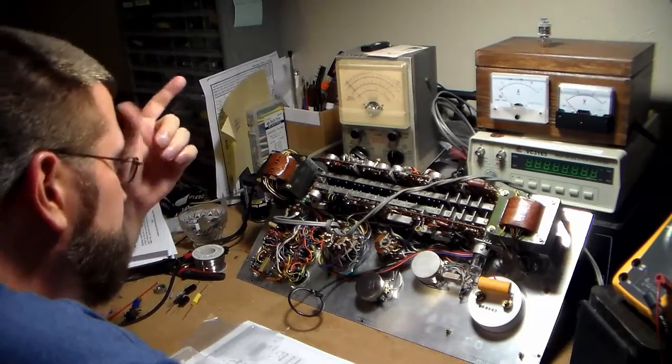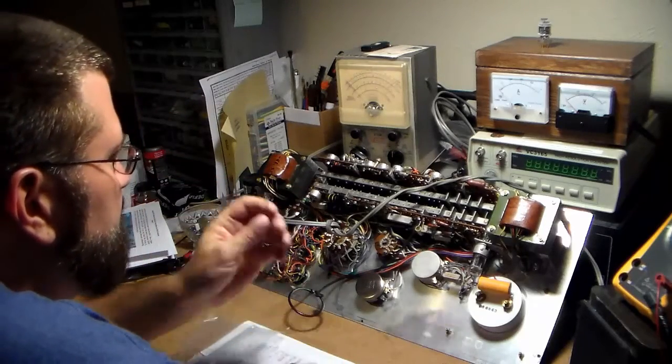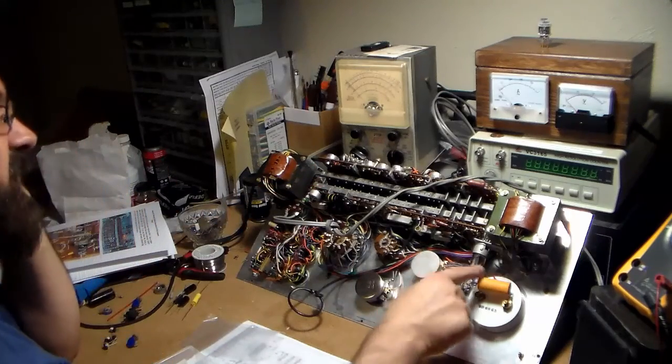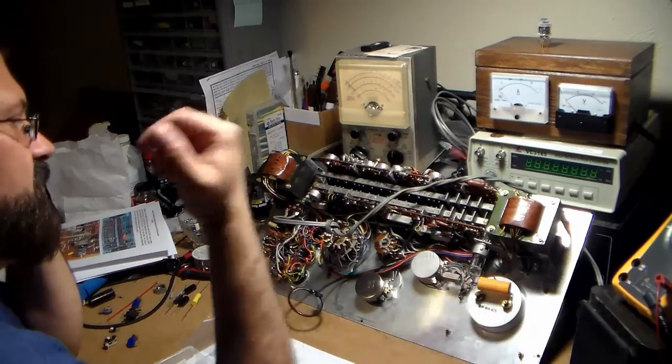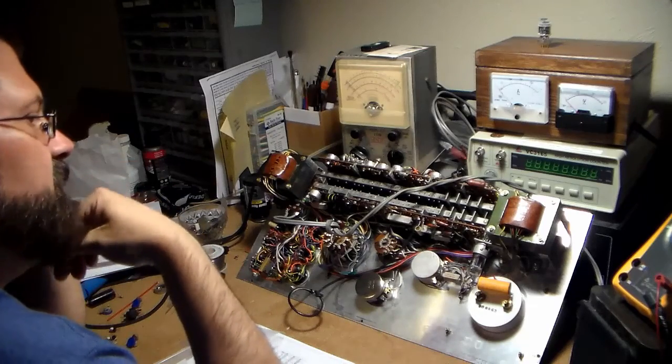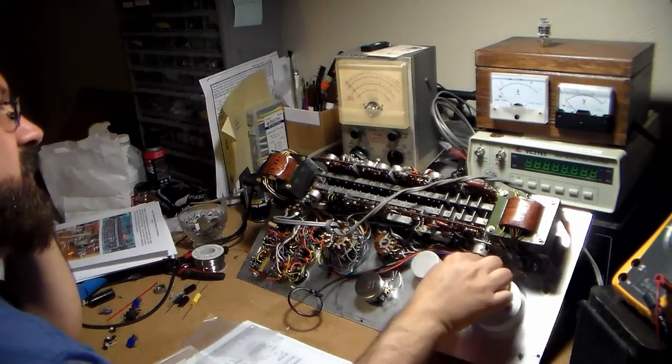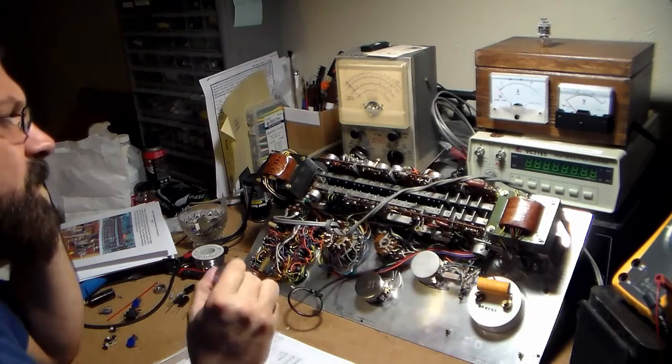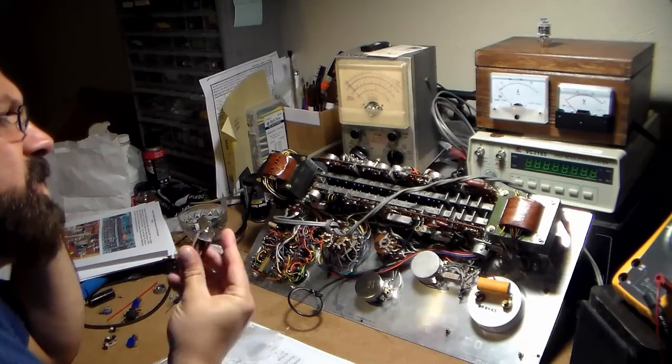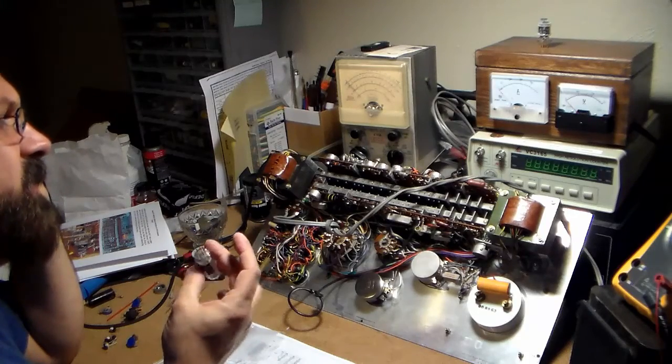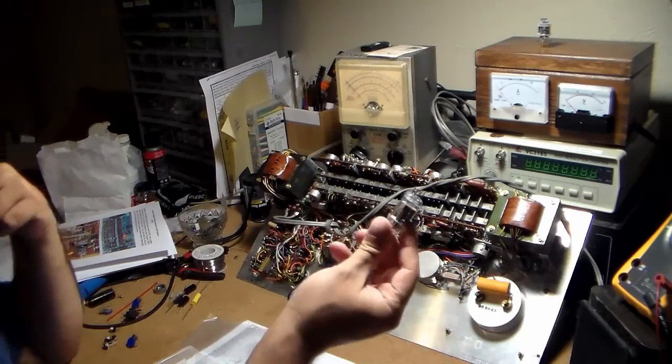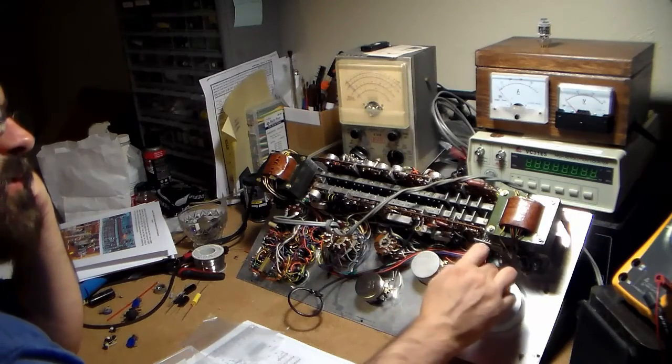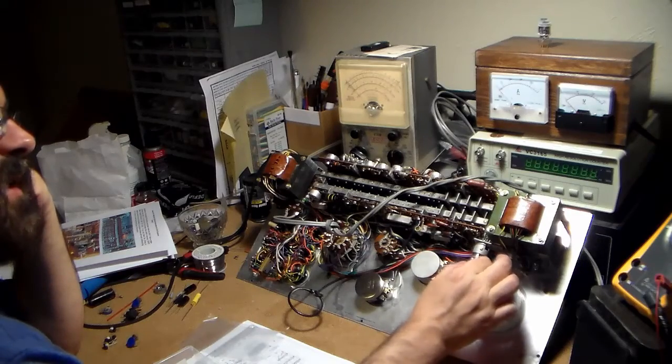So replacing those resistors, put that pot in, and then I've got a couple more caps to do. This tube tested good before but now we can't test the tubes anyway. All I have is my i177b and that won't, well I guess it will do 7 pin tubes but I don't know if it'll do a 6AV6 or not, I didn't even look.